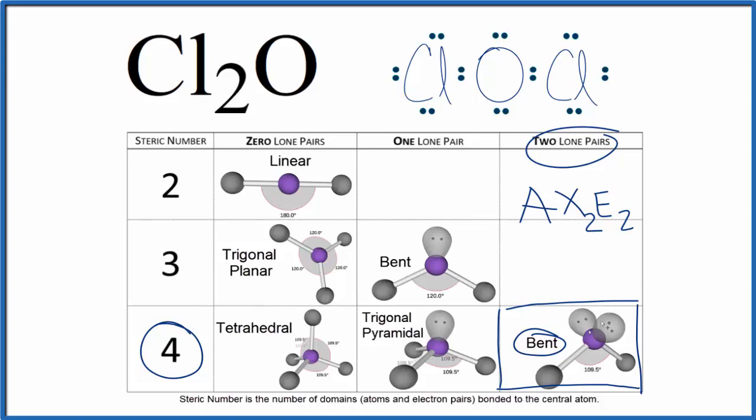Note that we do have this bent molecular geometry, but the electron geometry, if we take into account these lone pairs, the space they occupy, the electron geometry would be tetrahedral for Cl2O.